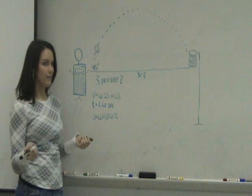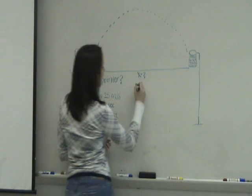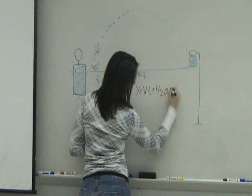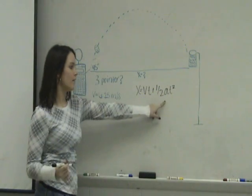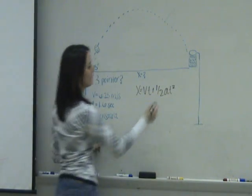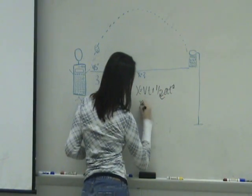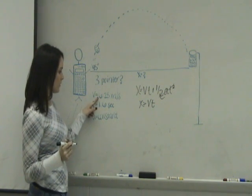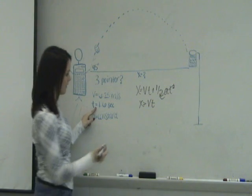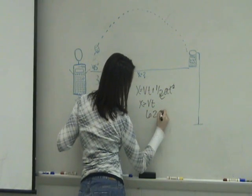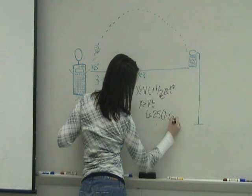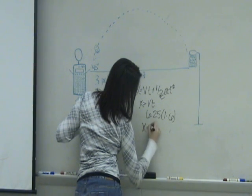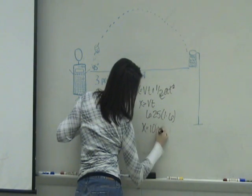So was it actually a 3? X is equal to VT plus 1 half AT squared. And since we know that the acceleration is constant, we can knock out that part and X is equal to VT. Velocity is 6.25 and time is 1.6. 6.25 times 1.6. X equals 10 meters.